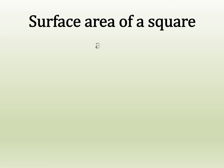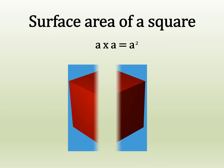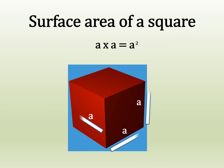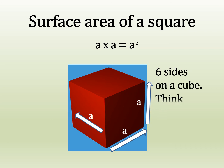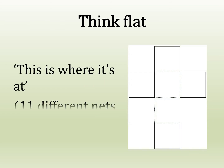We know that the surface area of a square is a times a, which makes a squared. But on a cube, we've got six sides. So one thing we can do is think flat — that's where it's at.